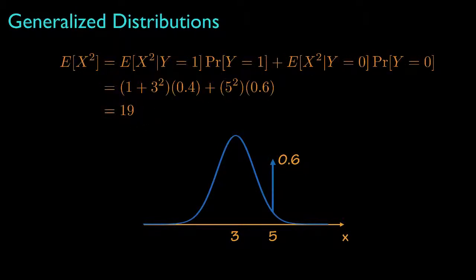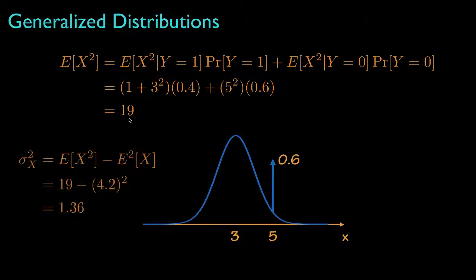Likewise, we could find that the second moment for x is equal to 19, so that the variance would be 1.36.